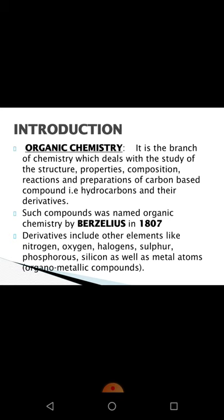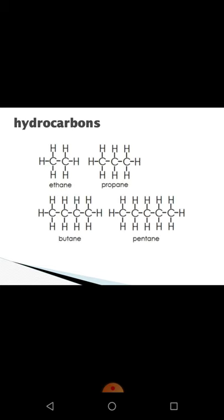In the study of these compounds, hydrocarbons and their derivatives are called organic chemistry. Examples of hydrocarbons include ethane, propane, butane, pentane, hexane, and heptane. In these compounds, only carbon and hydrogen are present, and carbon is directly linked with hydrogen. No other element is present. These are all hydrocarbons, and the study of these compounds is called organic chemistry.